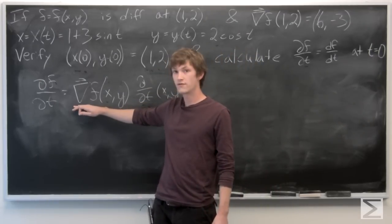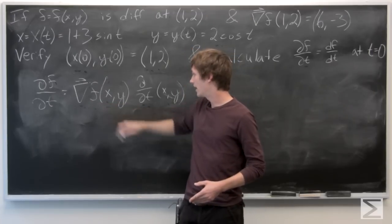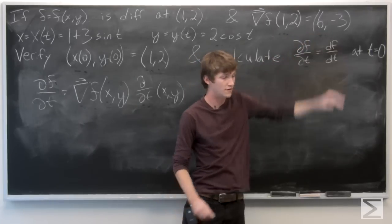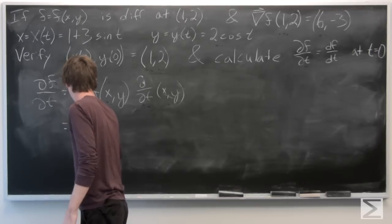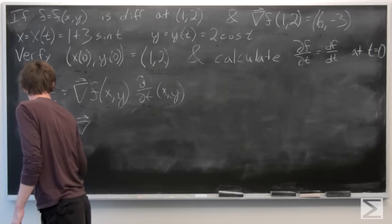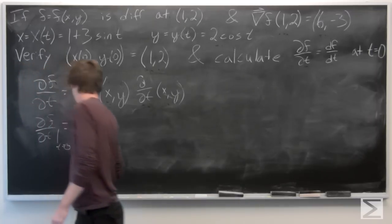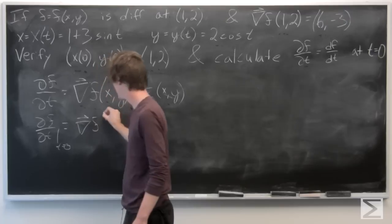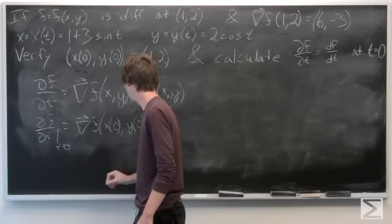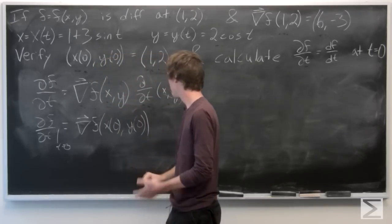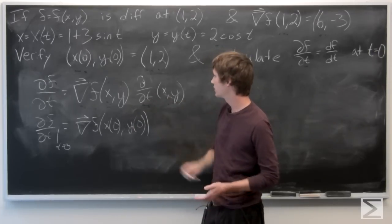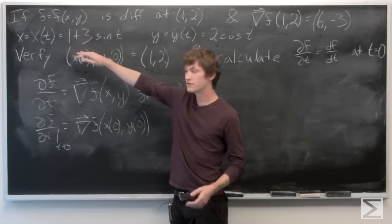So we're going to be taking the gradient vector of f at the point x, or at the point (1, 2), which is given to us in the problem. So it's (6, -3). So I'll just start writing this, since I just explained it. And then it's going to be multiplied by this partial derivative evaluated when t equals 0. So let's first calculate the partial derivative of x of t and y of t.